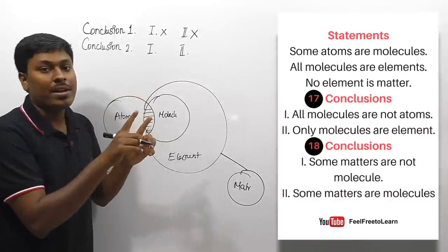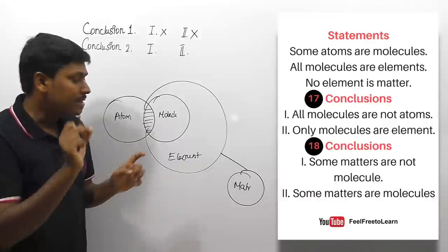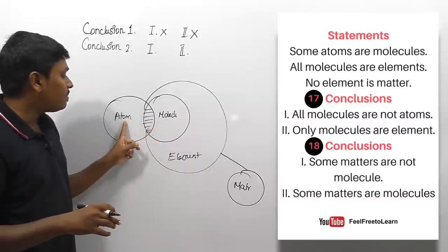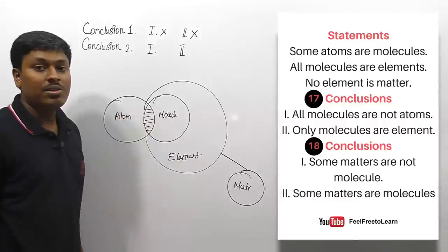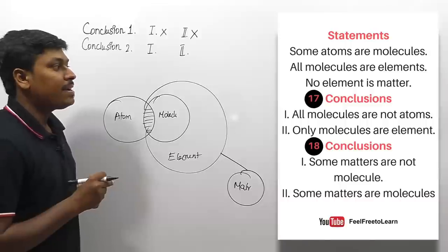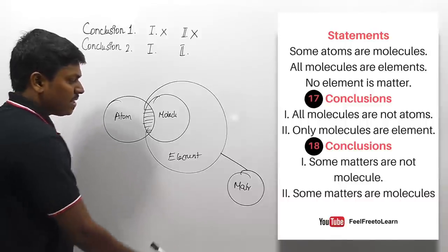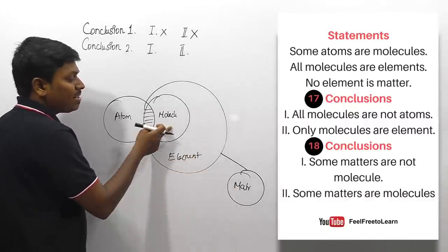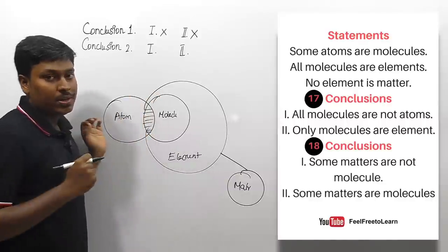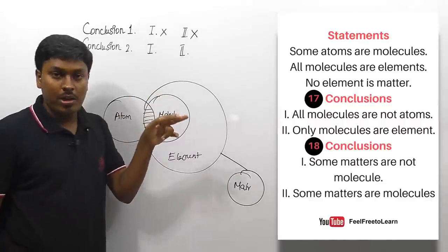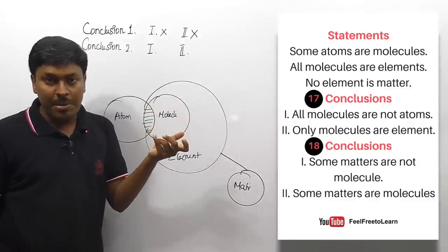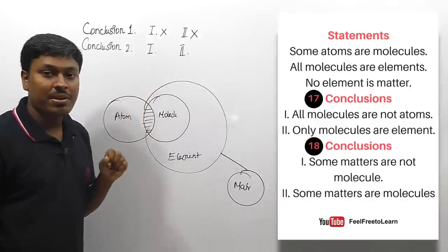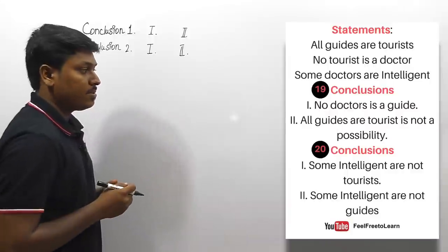When you find the word 'only' in a conclusion, only that one entity should be connected — if another entity is also connected, the conclusion fails. Second set, conclusion one: 'some matters are not molecules' — there is no link between matter and element, so no possible connection between matter and molecule either. This is correct. Conclusion two: 'some matters are molecules' — this with conclusion one forms a complementary pair: 'some A are not B' and 'some A are B.' So either one or two follows — the answer is either-or.